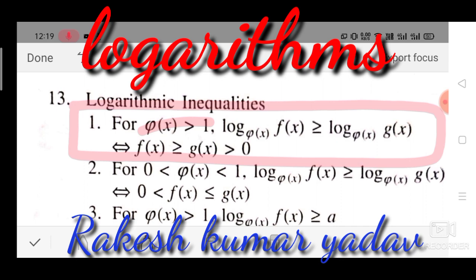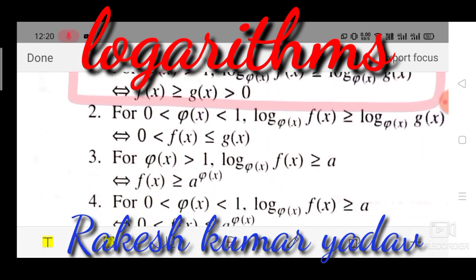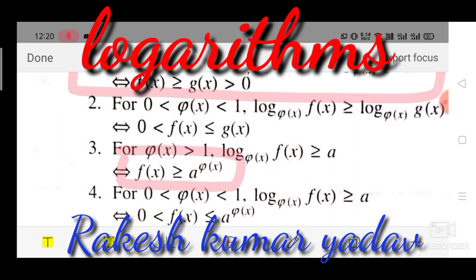For φ(x) between 0 and 1: if log(f(x)) to the base φ(x) is greater than or equal to log(g(x)) to the base φ(x), this implies f(x) is between g(x) and 0. Third inequality: for φ(x) greater than 1, if log(f(x)) to the base φ(x) is greater than or equal to a, then f(x) is greater than or equal to a^φ(x). Fourth: if φ(x) is between 0 and 1 and log(f(x)) to the base φ(x) is greater than a, then f(x) is between a^φ(x) and 0.